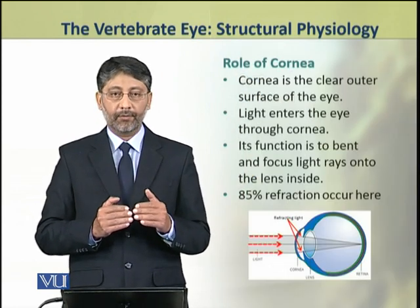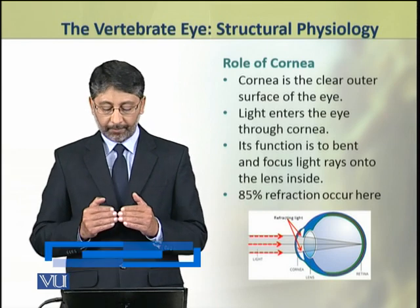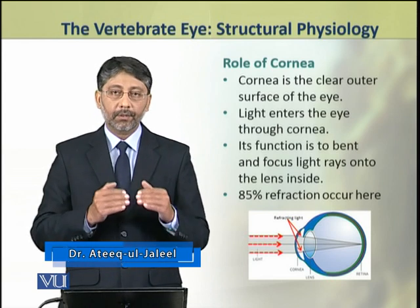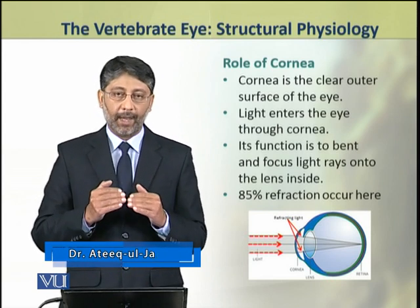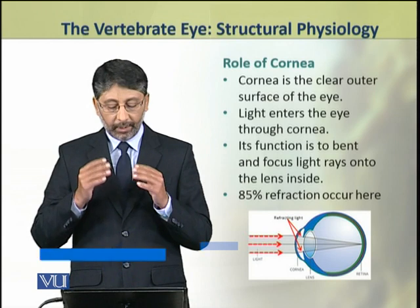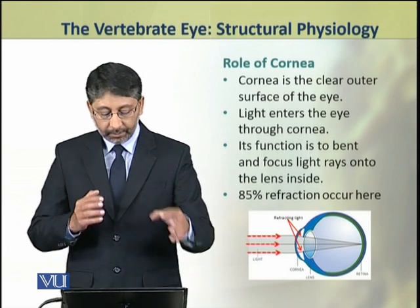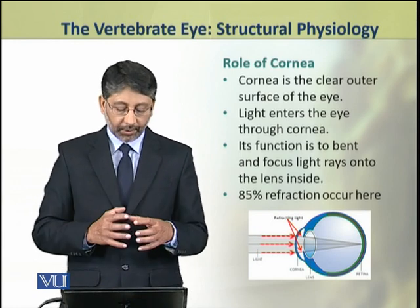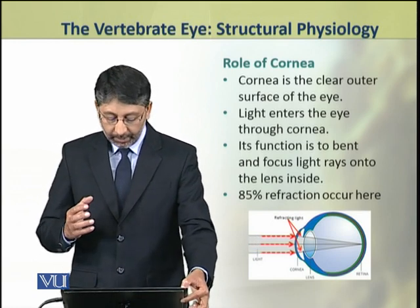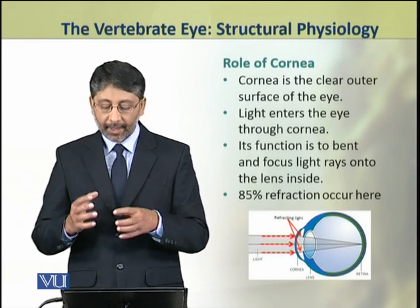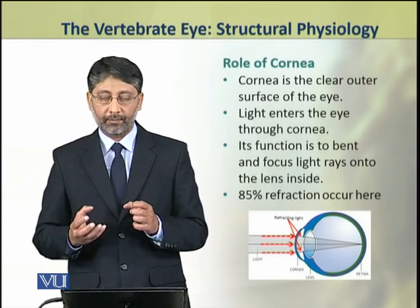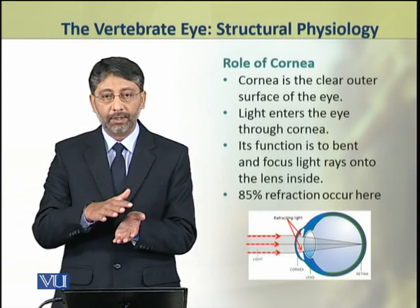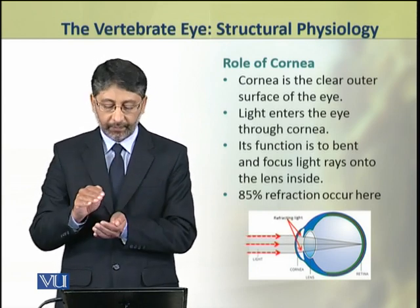First, we shall discuss the role of the cornea. The cornea is the clear outer surface of the eye. Light enters the eye through the cornea, and its function is to bend and focus light rays onto the lens.